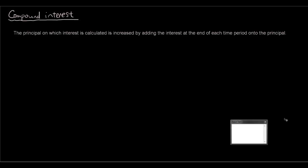So let's have a look at the definition for compound interest. Compound interest: the principal on which interest is calculated is increased by adding the interest at the end of each time period onto the principal. You probably still have no idea what it means, so I am just going to give you an example and show you by example what compound interest is.